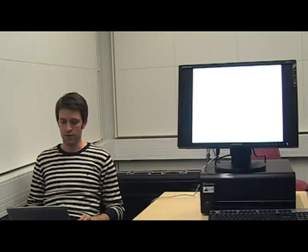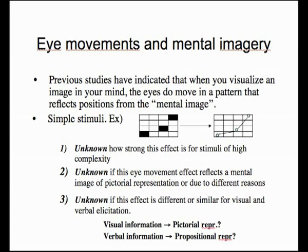How do we study what goes on in our mind and mental images? There are previous studies that have indicated that when you visualize an image in your mind, the eyes move in a pattern that reflects positions from the mental image. For example, it has been shown that simple stimuli like a grid pattern with a couple of black grids, later visualized, would elicit an eye movement pattern very similar to the original grid pattern. However, it is today unknown how strong this effect is for stimuli of high complexity, like a picture rich in detail and with very complex relations.